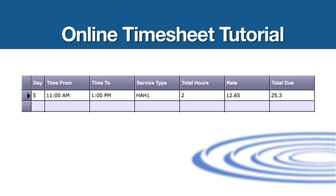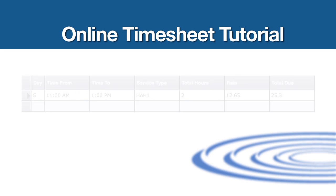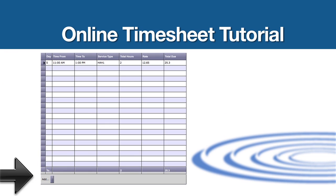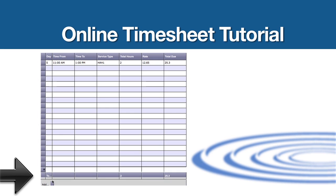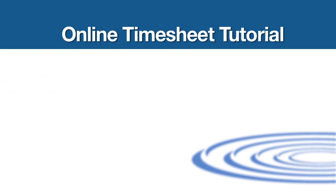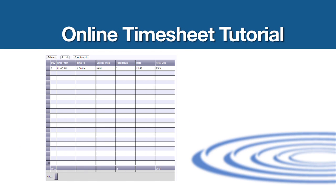Type H and Habilitation will appear under Service Type. Click Tab to calculate, then click Tab again to go to the next line. If you run out of lines, click the gray box at the bottom that says Add. If you work more than one service during the day, such as providing respite after habilitation hours, follow the above steps for each service and each time entry.